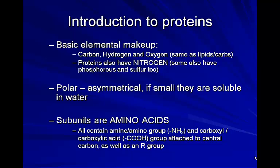The basic building block of all our proteins is the amino acid. There are 20 different amino acids in our body — I believe 12 are non-essential and 8 are essential. Essential means our body doesn't have the ability to make them in high enough quantities, so we must consume them. The non-essential ones we can make from other amino acids through metabolic processes.